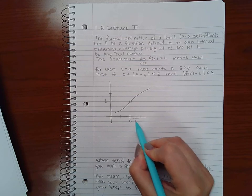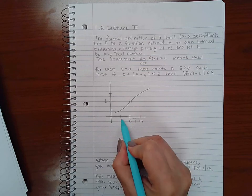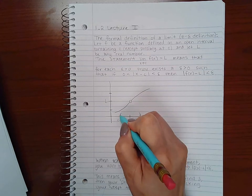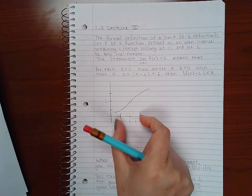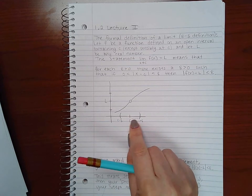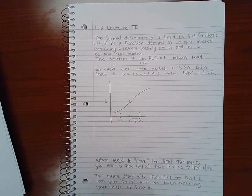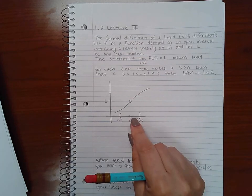It would need to be within some delta distance away from that C. So if I would consider this as a unit of delta, this would be C plus delta and this would be C minus delta. You're in some neighborhood around C, so your x value is around C but no more than delta units away.